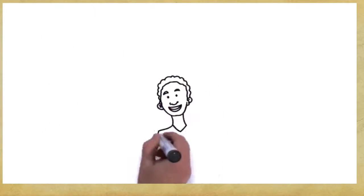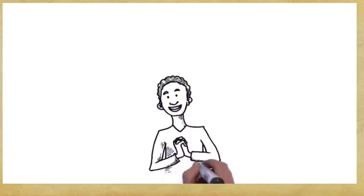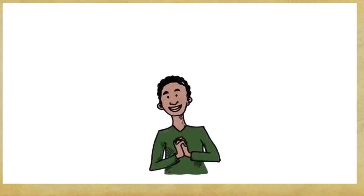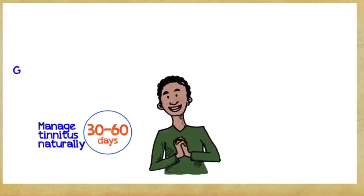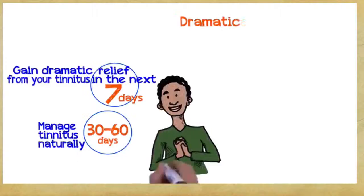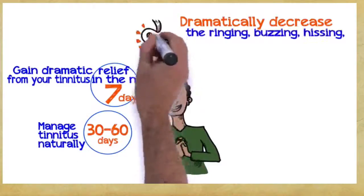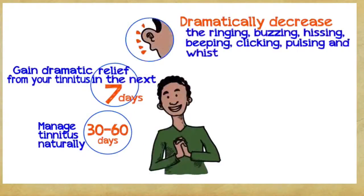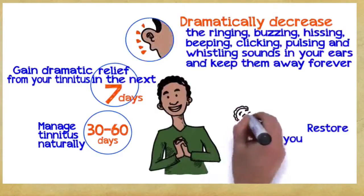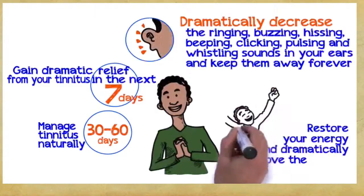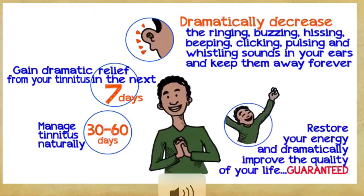So, what can you gain if you embrace these three easy principles? You can manage tinnitus naturally within 30 to 60 days, gain dramatic relief from your tinnitus within the next seven days, dramatically decrease the ringing, buzzing, hissing, beeping, clicking, pulsing, and whistling sounds in your ears and keep them away forever. Restore your energy and dramatically improve the quality of your life, guaranteed.